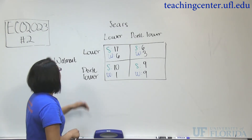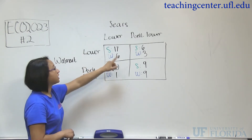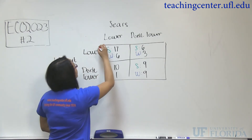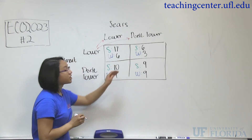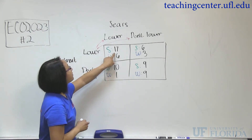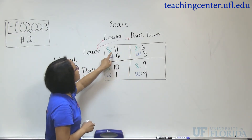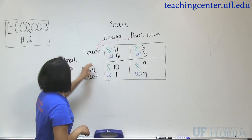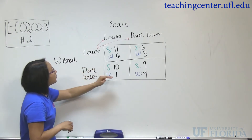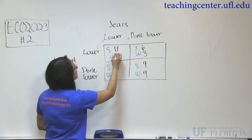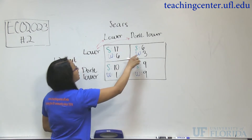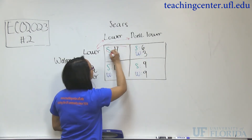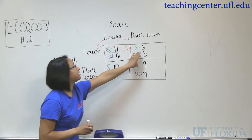Let's see — if Walmart lowers their prices, what will Sears do? We have an option to lower or not lower, and our decision depends on the profits we make. Here are Sears' profits in green — we only compare Sears' profits. If Walmart lowers its prices and we lower, we can make 17. If we don't lower, we're going to make 6. So we're going to want to lower our prices because 17 is greater than 6.